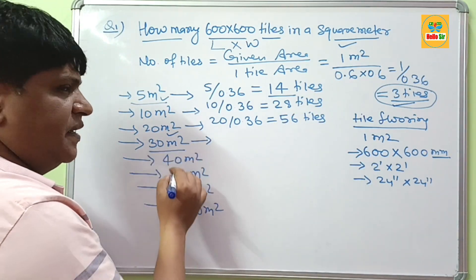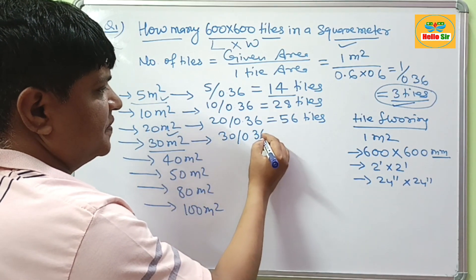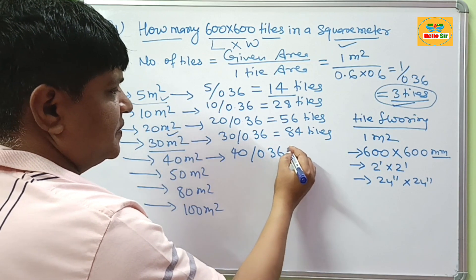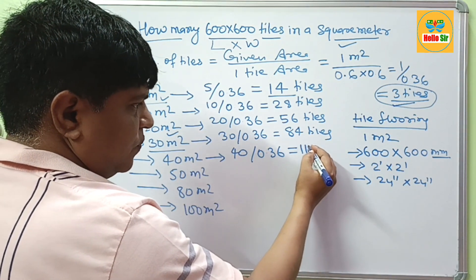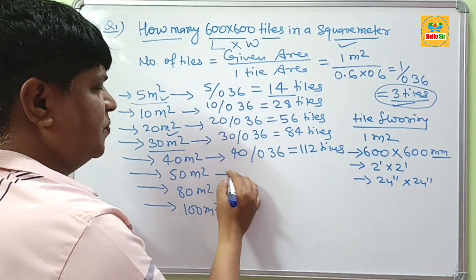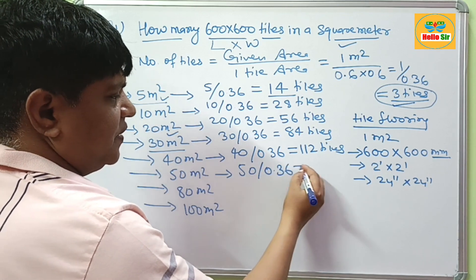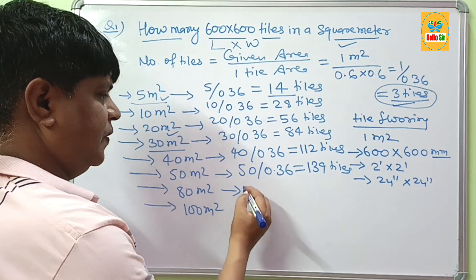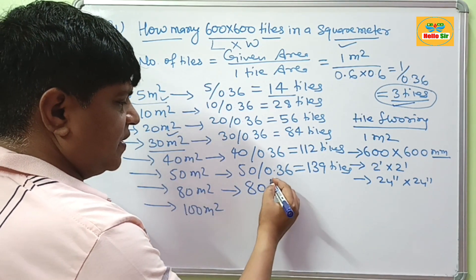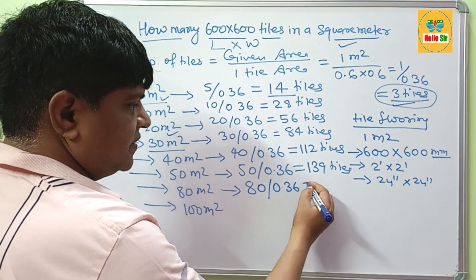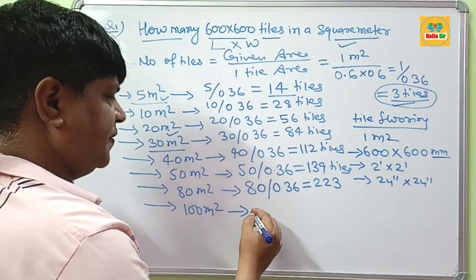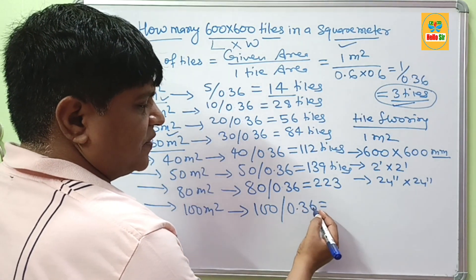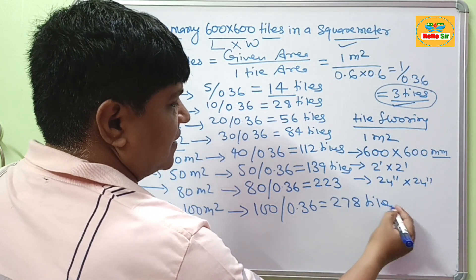If your tile project area is 30 square meters, 30 divided by 0.36 comes to about 84 tiles. If your tile area is 40 square meters, 40 divided by 0.36 gives about 112 tiles. For 50 square meters, 50 divided by 0.36 gives about 139 tiles. If your tile project area is 80 square meters, 80 divided by 0.36 gives 223 tiles. And if your tile project area is 100 square meters, 100 divided by 0.36 comes to about 278 tiles.